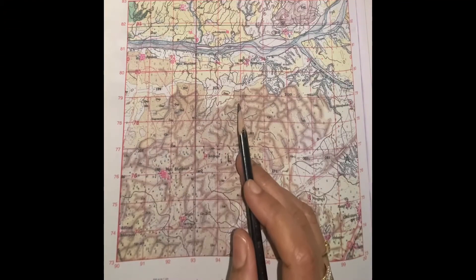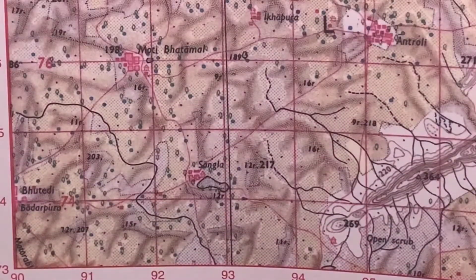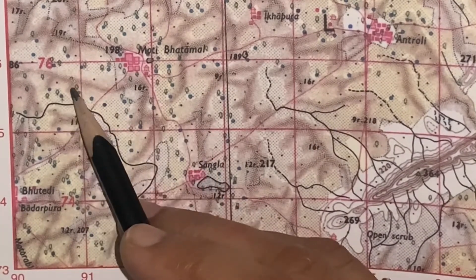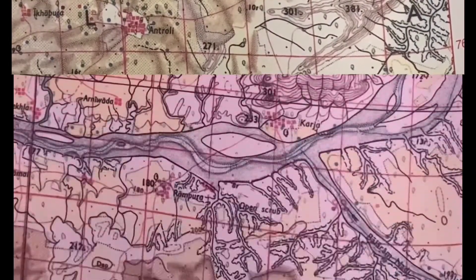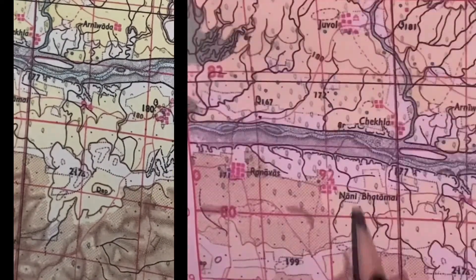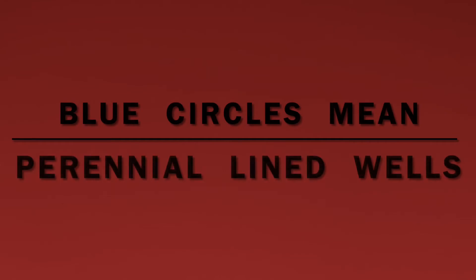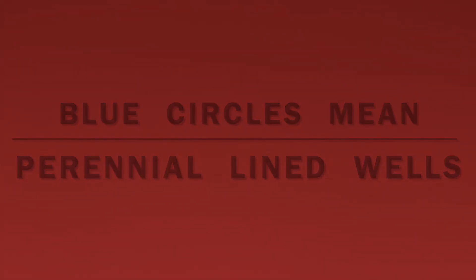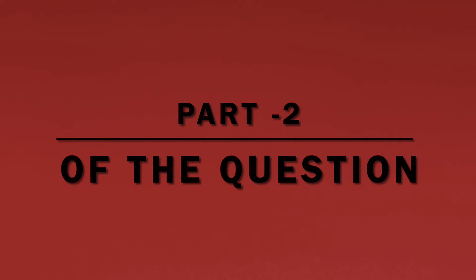You will notice blue circles all over in the southwest part of the map, even in the southeast part, a few on both sides of Balaram Nadi, as well as a few on the northwest part of this map. We know that blue circles represent perennial lined wells. Thus, your answer will be: perennial lined wells are the chief forms of irrigation in the given map.